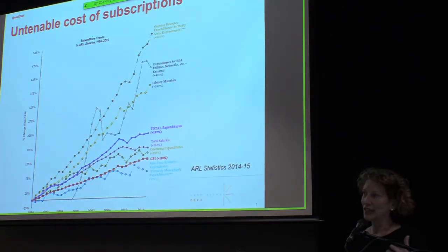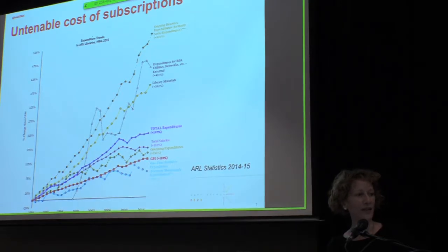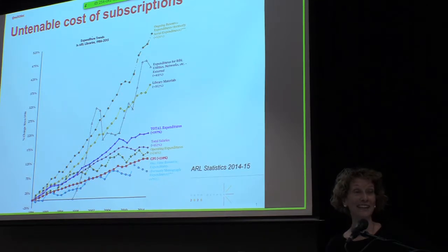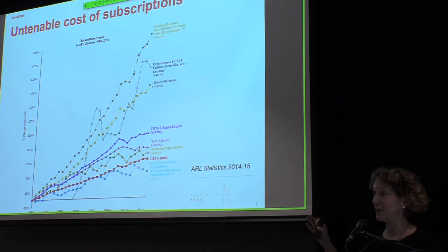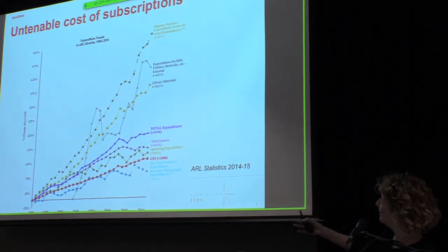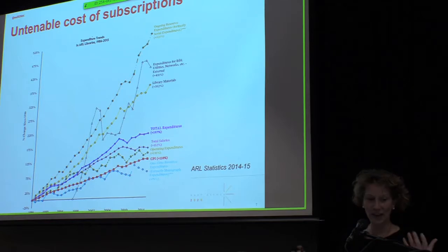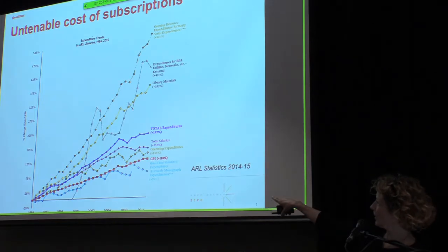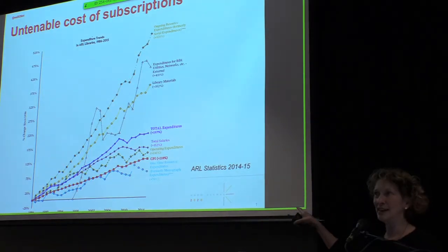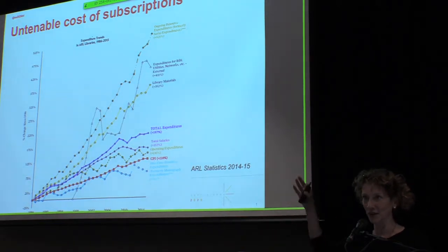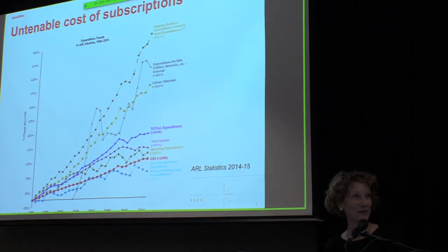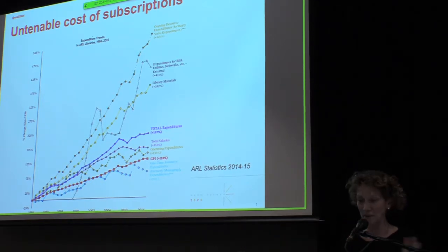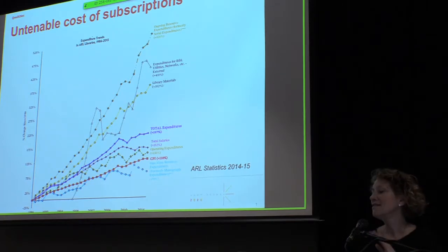This is nothing new. This is a graphic taken from the Association of Research Libraries in the United States. Considering also your currency fluctuation, the situation here is much worse. The highest line shows expenditures for electronic resources, in particular journals. The red line is the consumer price index. You can see how the cost of subscriptions has grown way out of proportion. This is a situation we are all in, some more than others because of currency fluctuation.